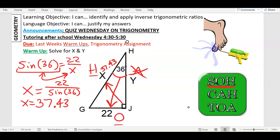I'll label it. Okay, so now I know X is 37.43. Now I can find Y. There's two ways to find Y. How do you think I can find Y? Give me one way.